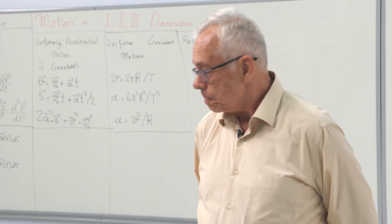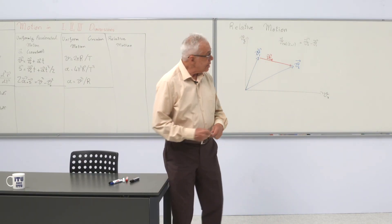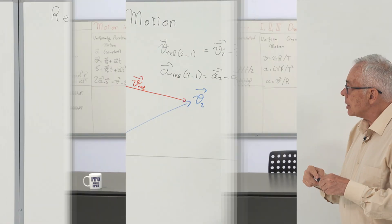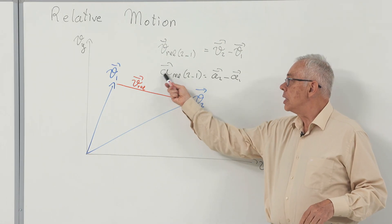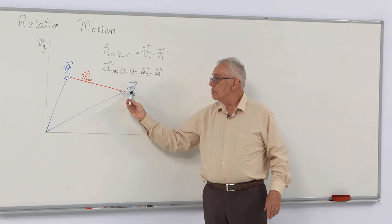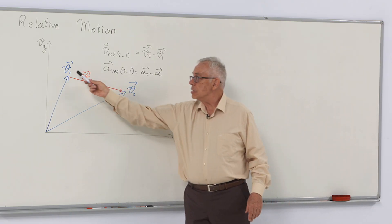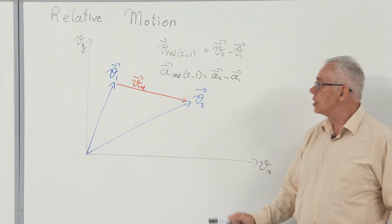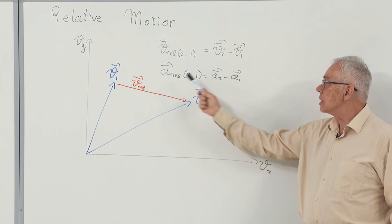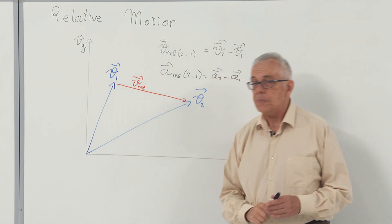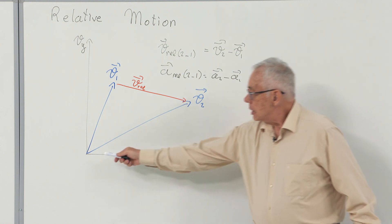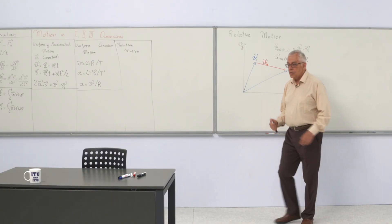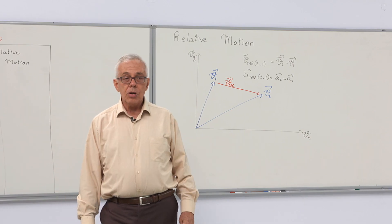The acceleration in relative motion is similar. The acceleration of the second particle or observer with respect to the first equals its acceleration with respect to the stationary observer minus the acceleration of the first one with respect to the stationary observer. This is important when investigating forces on a moving object as seen by different observers.